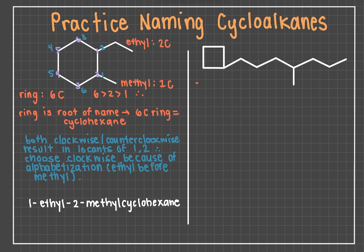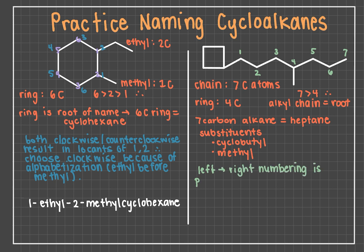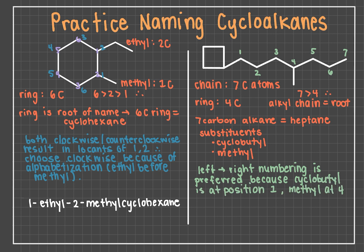Lastly, the example on the right. You can see that there is a ring as well as an alkyl chain. There are seven carbon atoms within the chain and only four within the ring. This would therefore be a cycloalkyl-substituted alkane, with the root of the name being heptane, with a cyclobutyl substituent. There is also a methyl substituent located on the heptane chain. Next, number the heptane molecule so that both substituents have the lowest position possible. If you number left to right, the cyclobutyl group has a position of one and the methyl group has a position of four. Numbering right to left would leave the methyl group at position four with the cyclobutyl group at position seven. Because one is less than seven, the left to right numbering is preferred. The name for this molecule would be 1-cyclobutyl-4-methylheptane.